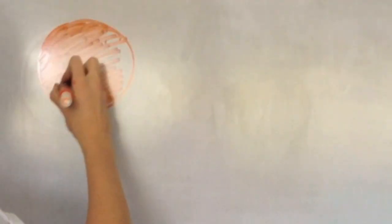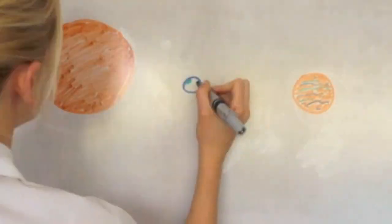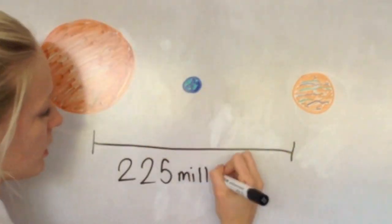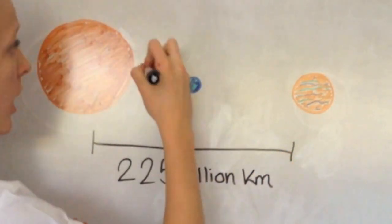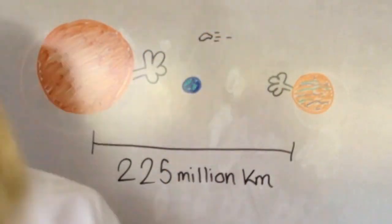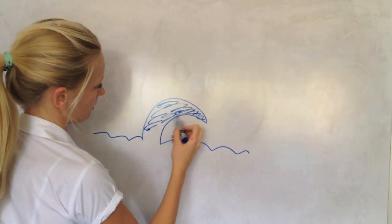The object would slingshot around the Earth, fly off to Jupiter, and then be gravity assisted back to Earth, basically like a long game of catch between planets. Over millions of years, this would bring the Earth to a comfortable 225 million kilometer orbit away from the Sun.